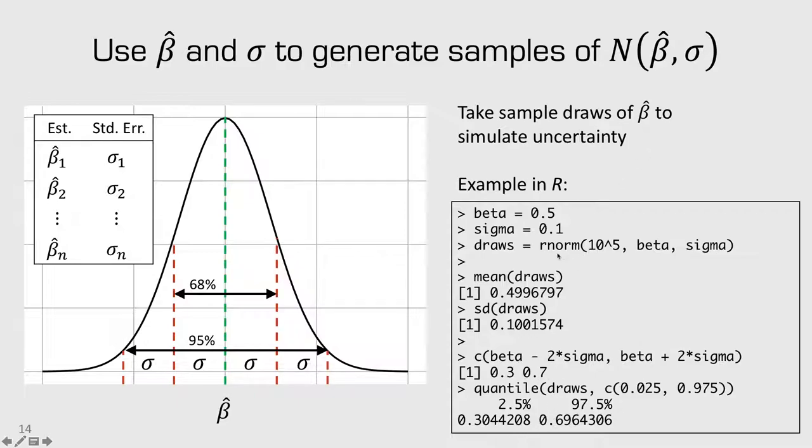So, we can use these random draws to compute statistics that are useful for us. And we're going to use the same concept to compute uncertainty around willingness to pay and our market share predictions.